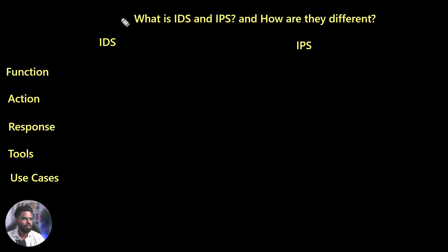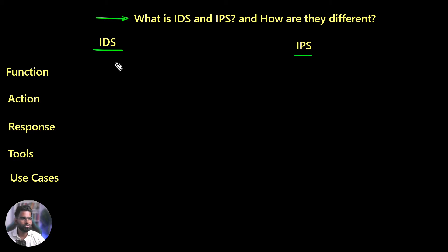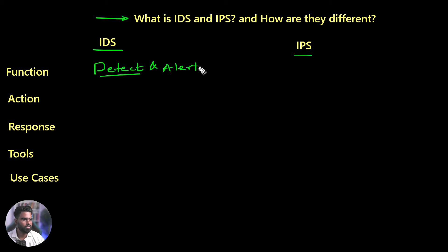So here you can see our interview question: what is IDS and IPS and how are they different? Let's start with the functionality. IDS — as I said, the major function is to detect. The function of IDS is to detect and give an alert to the SOC analyst, or the threat management team who might be monitoring active alerts from the IDS.